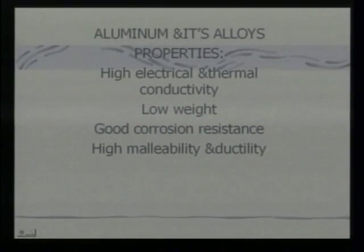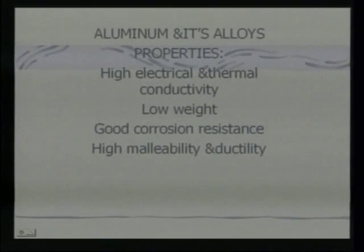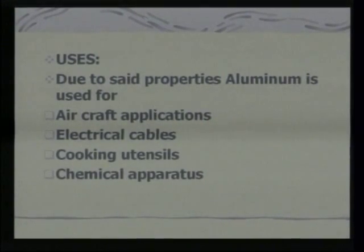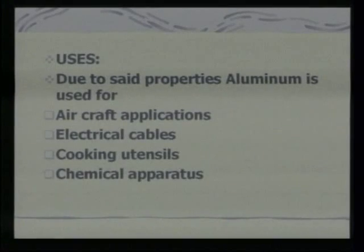Aluminum and its alloys have properties including high electrical and thermal conductivity — used for making current-carrying wires — low weight, good corrosion resistance, and high malleability and ductility. Aluminum is used for aircraft applications such as aircraft wings and other components, electrical cables, cooking utensils, and chemical apparatus due to good corrosion resistance.